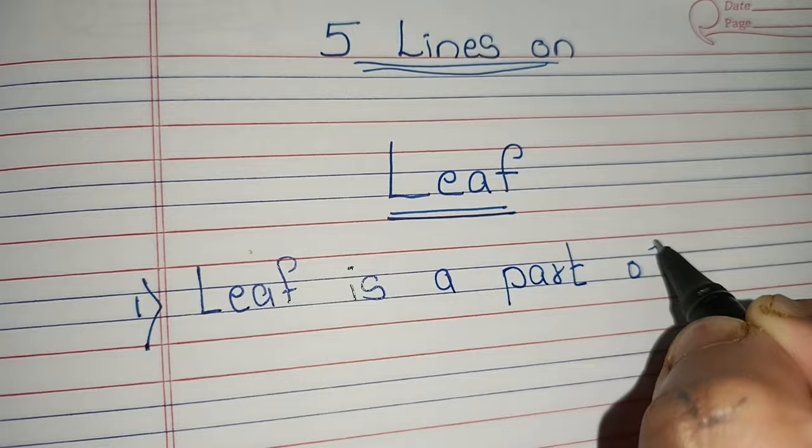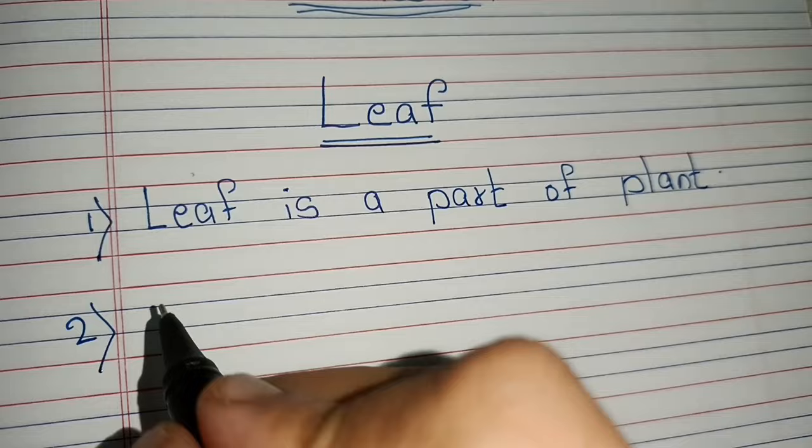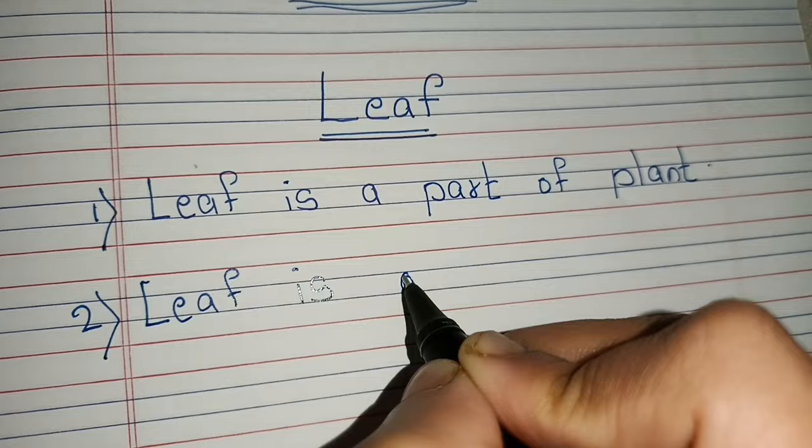Leaf is a part of a plant. Leaf is green in color.